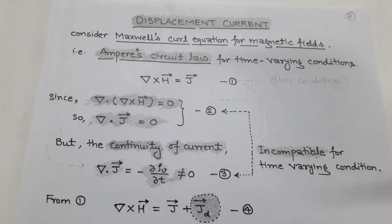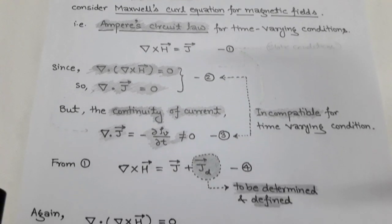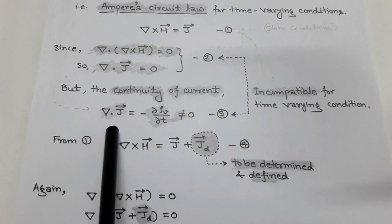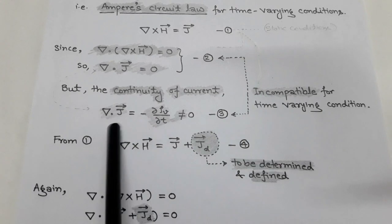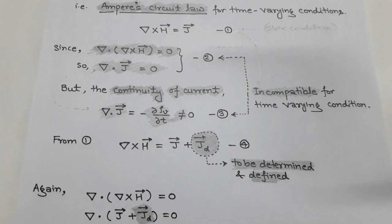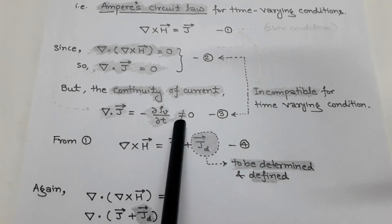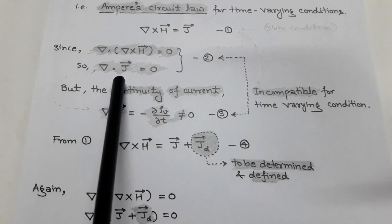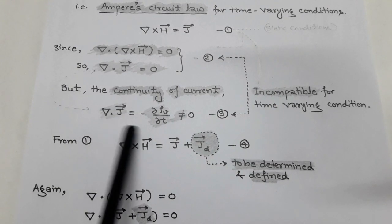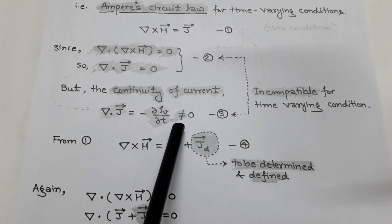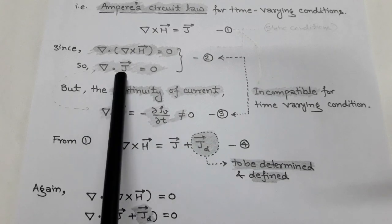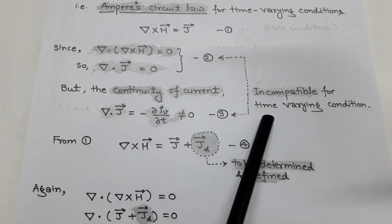But here we talk about time-varying fields. For the time-varying condition, we use continuity of current, which states that the divergence of J vector is equal to minus del rho_v upon del t. This is called continuity of current. So from continuity of current, the divergence of J vector is not equal to zero. So the above condition requires divergence of J vector to equal zero, but from continuity of current, divergence of J vector is not equal to zero. So there is a difference in compatibility for time-varying condition.